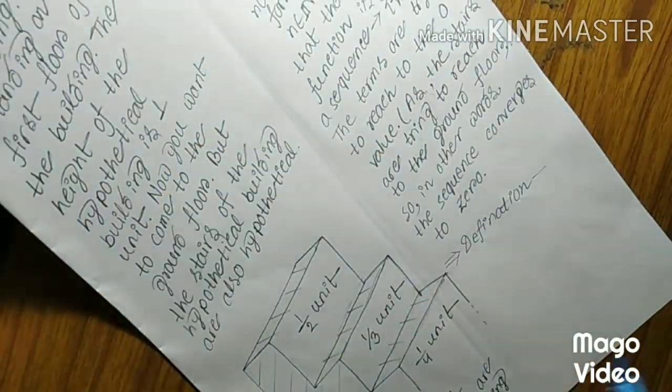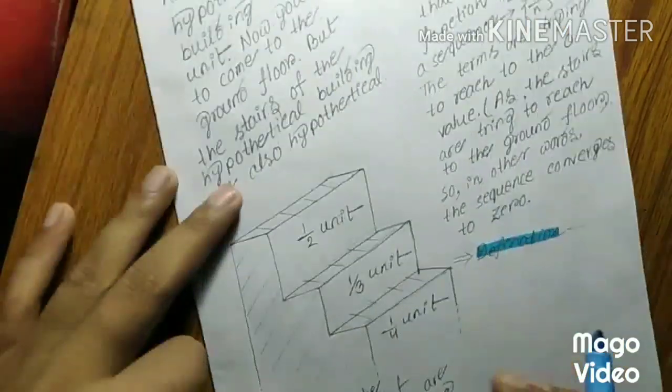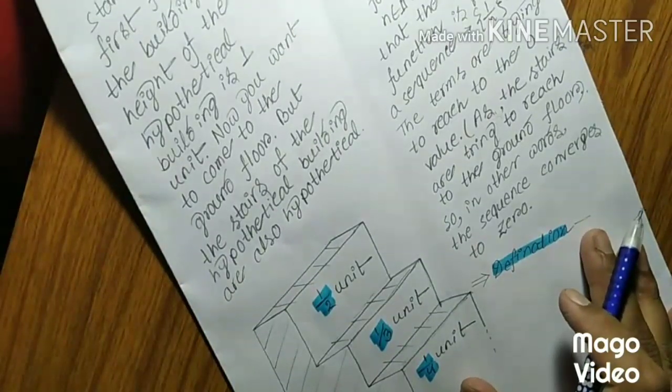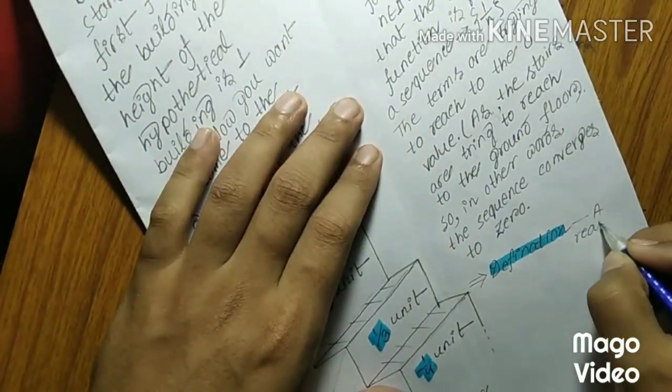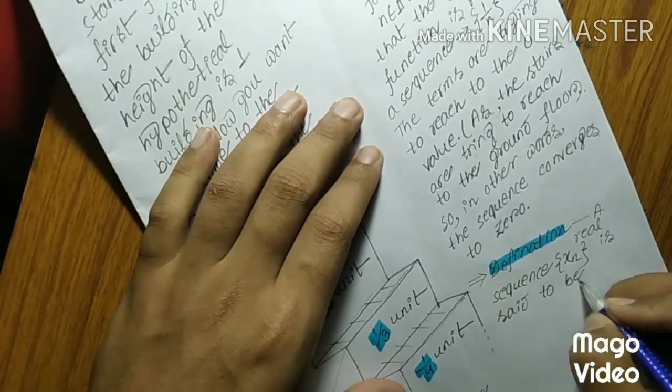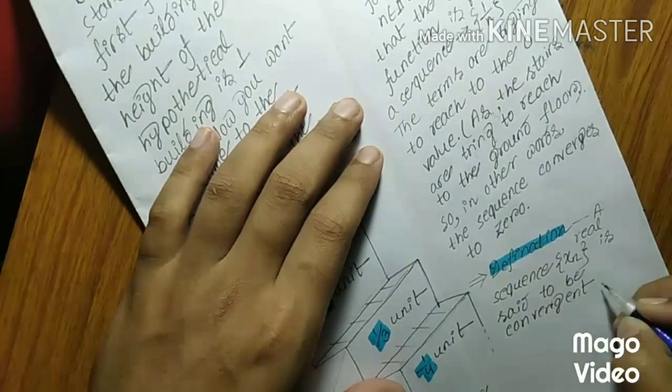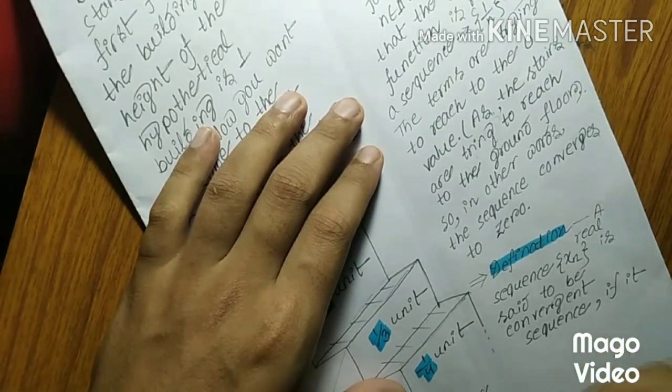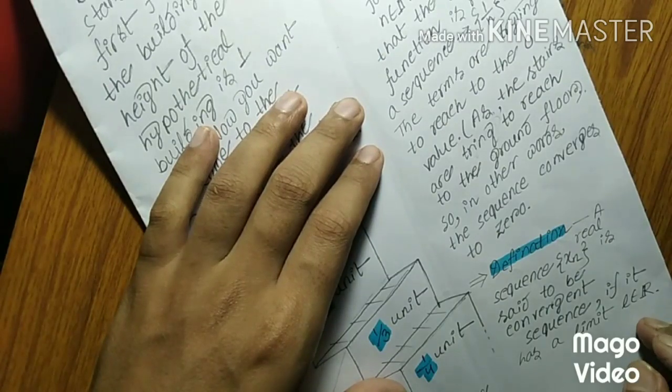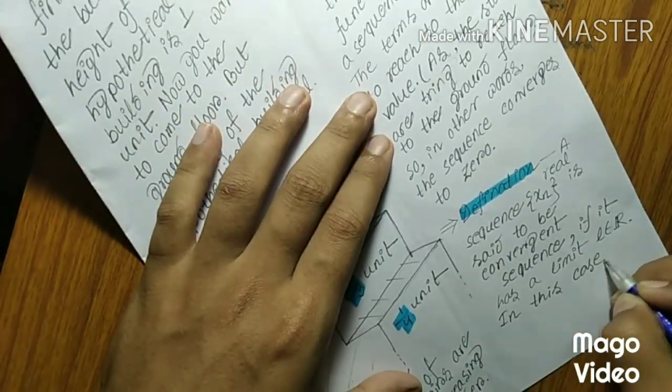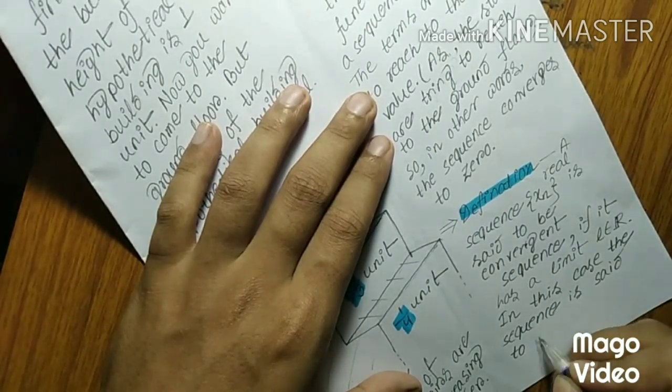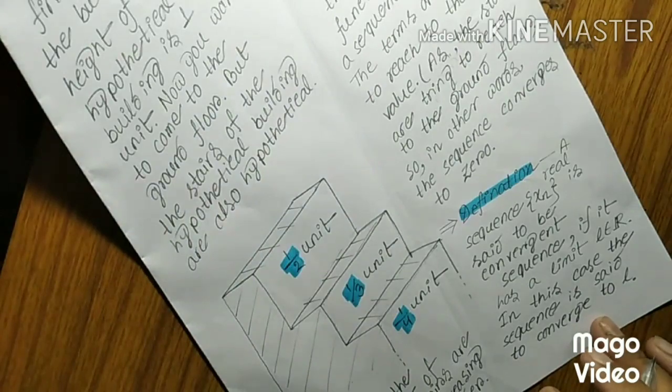Definition. A sequence xn is said to be convergent sequence if it has a limit L belongs to R. In this case, the sequence is set to converge to L.